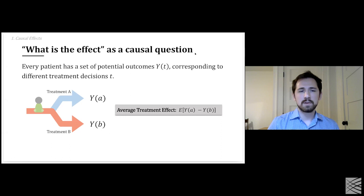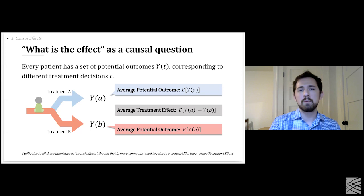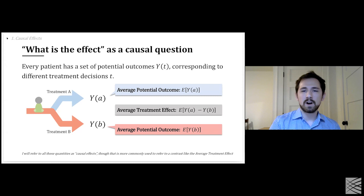You might ask questions like: what is the average treatment effect? If treatment A is giving some drug and treatment B is a placebo, the average treatment effect is one of the things we commonly estimate in a randomized controlled trial. For this talk, I also want to focus on these quantities individually, which can be useful when there are more than two treatments — for instance, selecting from a list of drugs — and also because it will make policy evaluation easier to understand.